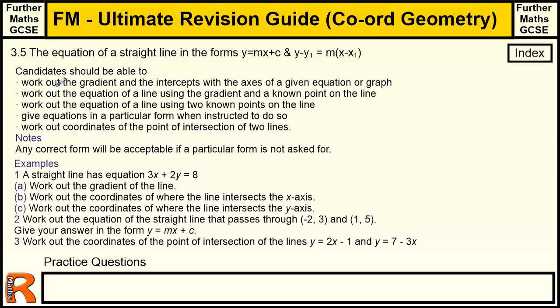Things we should know: We should be able to work out the gradient and intercepts with the axes of a given equation or graph. The gradient and intercepts, if we've got it in the y equals mx plus c form, this is the best form for equations of lines. The gradient is the m, the intercept is the c. So if you can get into the form where y is on its own and it's equal to something times x plus or minus a number, then you have everything you need. The intercept is the c, the gradient is the m.